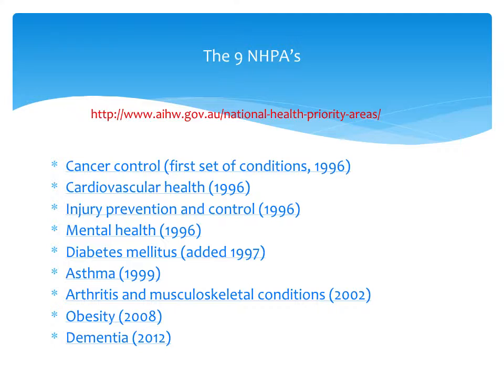Looking at the nine National Health Priority Areas, there is a website with direct links to extra information for each. The first was cancer control, and most were established in 1996 with cardiovascular health, injury prevention, and mental health. Diabetes mellitus was added in 1997, asthma in 1999, arthritis and musculoskeletal conditions in 2002, obesity — a rising epidemic — in 2008, and the most recent, dementia, in 2012.